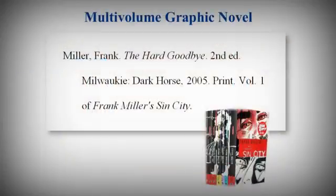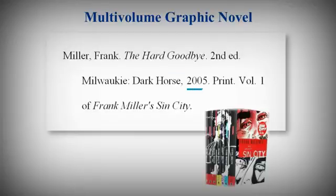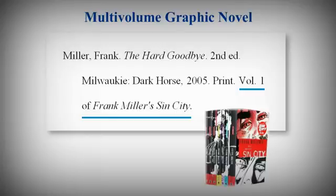Many graphic novels are part of a multi-volume series, and individual volumes can have their own titles. After the first name, enter the title of the individual volume in italics. The year should indicate when that volume was published. At the end of the citation, after the medium, indicate the volume number and the name of the series in italics. In this case, The Hard Goodbye is volume one of Frank Miller's Sin City.